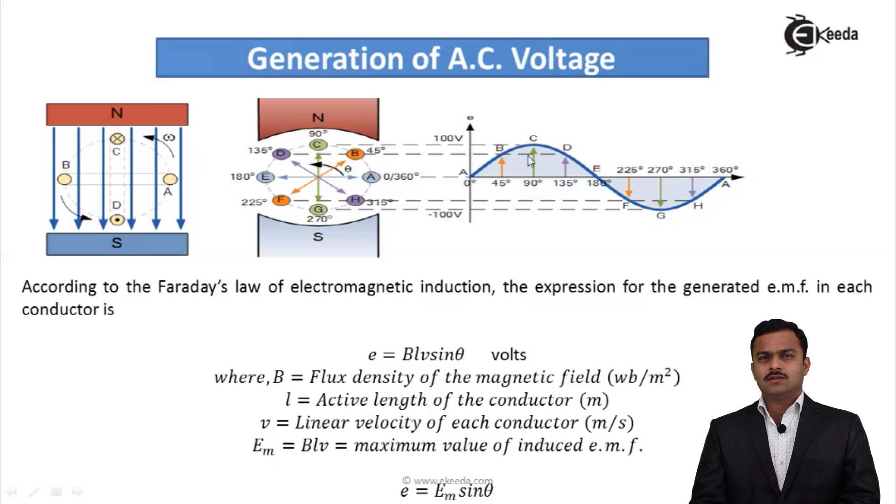As per the different location of the conductors, I have seen how the EMF is getting induced. So for every point A, B, C, D, E, F, G, H, I can get an EMF like this. If I join these points, I will get a sinusoidal curve. So what I can say ultimately, EMF induced is given by EM sin θ. So basically, it is a sinusoidal function.